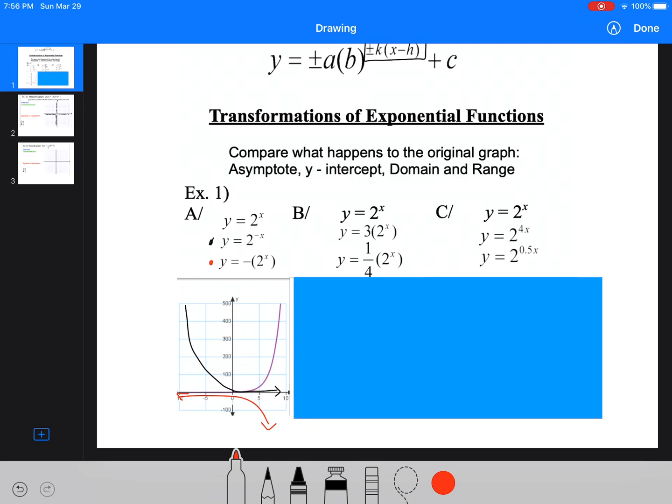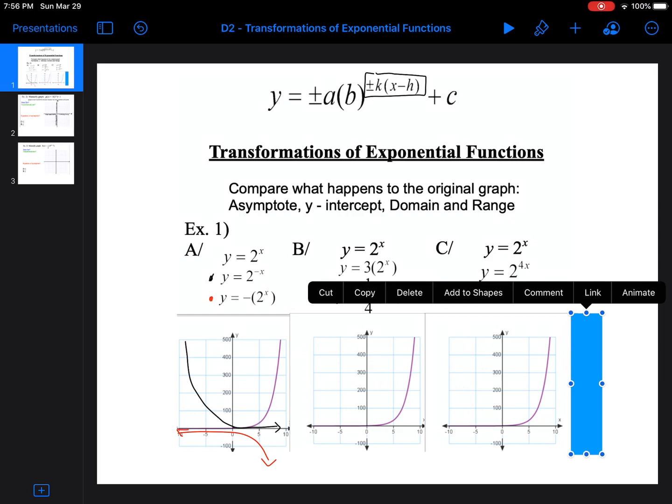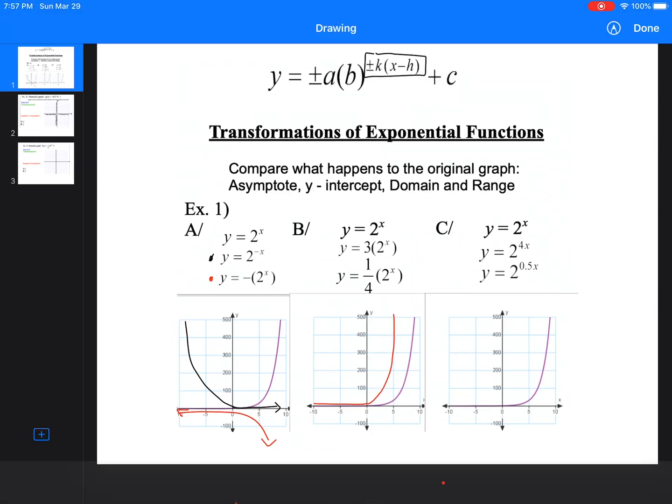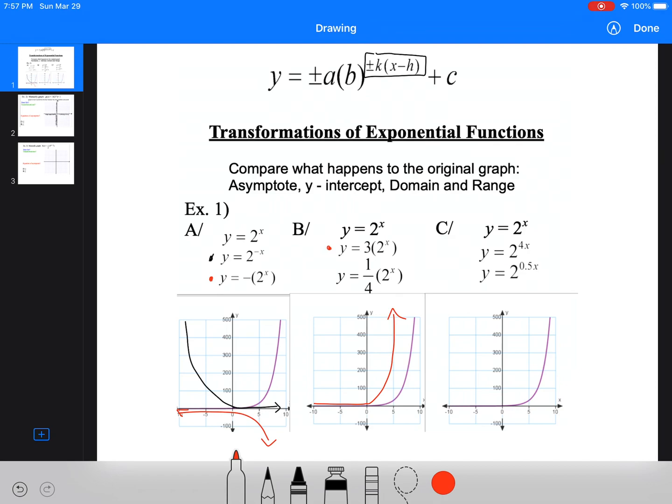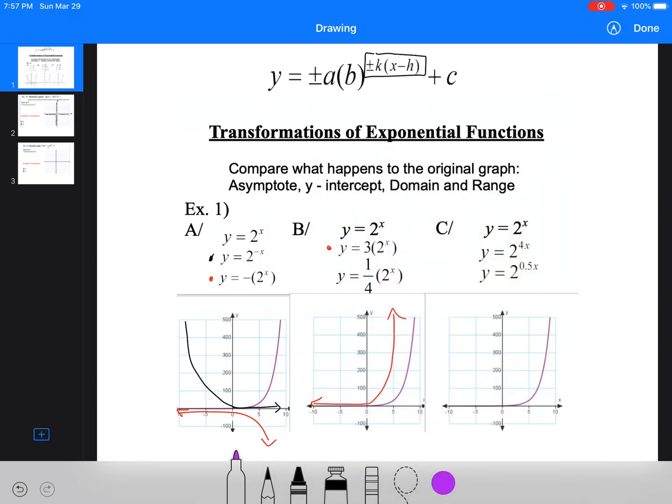But for our range, we've obviously flipped it down, so rather than being greater than zero, it's now going to be less. Okay, the next graph we're looking at here, these are just the exact same graphs. The next graph, when we have that three out front, that's the a value. So the three out front this time, it's actually going to increase the graph quicker. So that would be this graph here. Okay, it's just going quicker up.